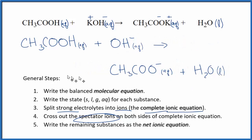And this is the net ionic equation for CH3COOH plus KOH, acetic acid plus potassium hydroxide.